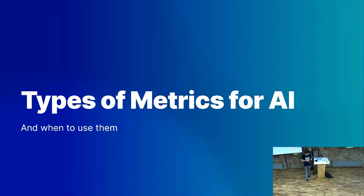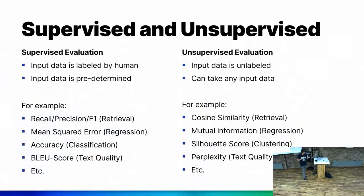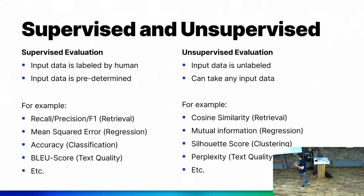As an AI developer, I'll explain how we evaluate AI. We have two most important types of evaluations: supervised and unsupervised. Supervised evaluations require a labeled dataset — this is the correct answer, or this is what we want to achieve. This labeled dataset is labeled by humans, which is very important. It also means the input data is predetermined, so we can't easily add new data without first having a human review it.